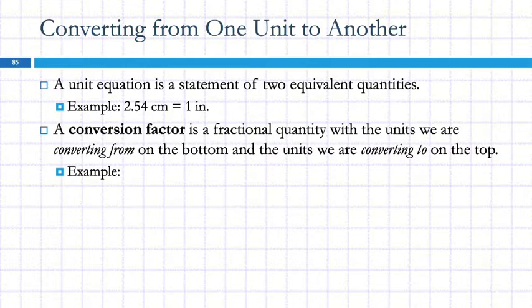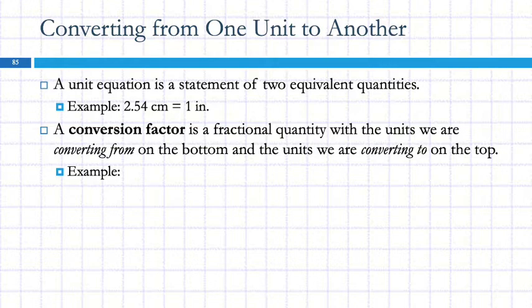Table 1.3 of unit relationships shows us two different but equivalent quantities. So 2.54 centimeters is equal to 1 inch — both are descriptions of the same length. From that we can make a conversion factor, which is a fraction with one unit on top and one unit on the bottom, and we can make it either way.